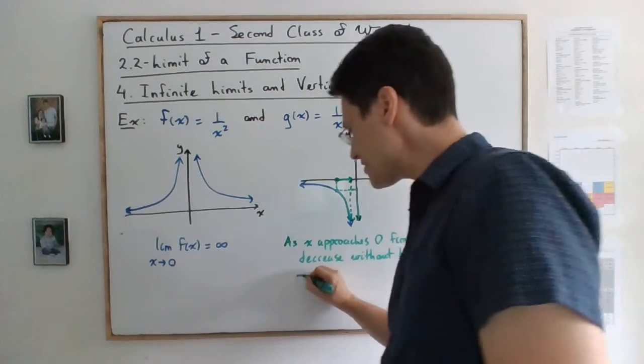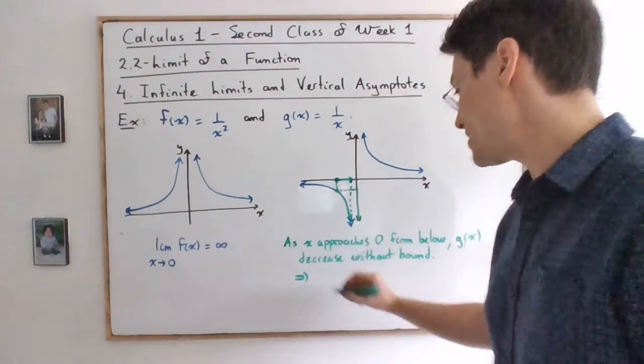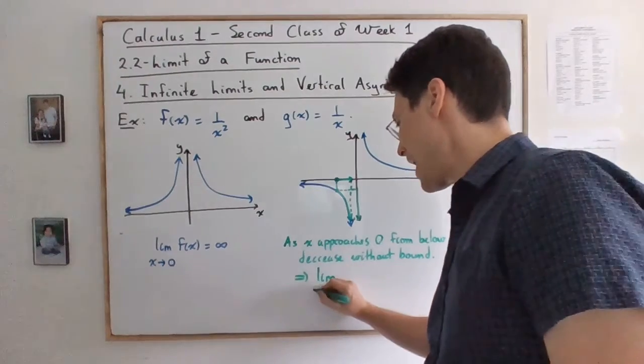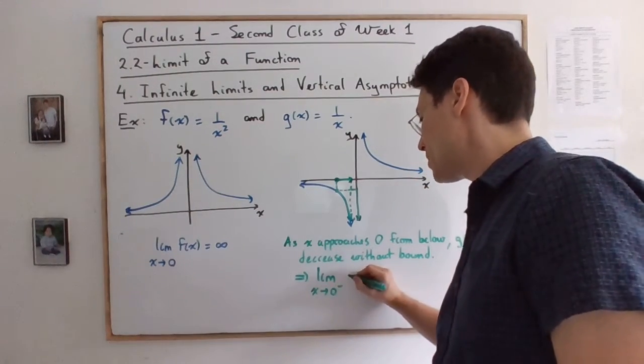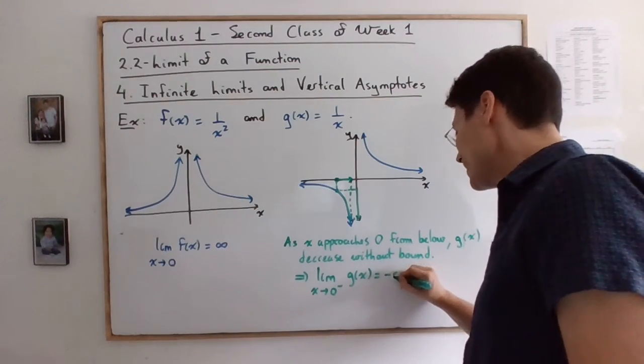And we haven't seen this limit yet, but it's basically the opposite behavior of this. So we say that the limit as x is approaching 0 from below of g(x) is equal to negative infinity.